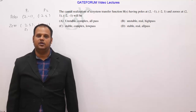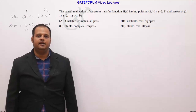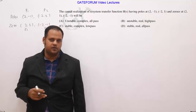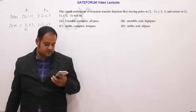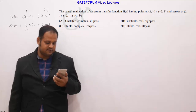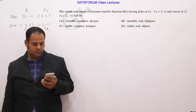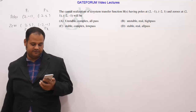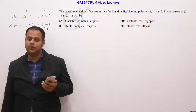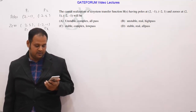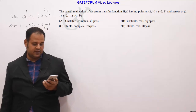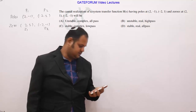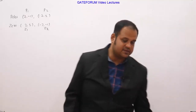This is a two-mark question asked in GATE 2020 Electrical Engineering, from the Signals and Systems subject, specifically from Laplace transform concepts. The question gives a causal realization of a system transfer function H with given pole and zero locations. Based on this, we want to comment on stability, whether it is real or complex, and whether it is low pass, high pass, or all pass.